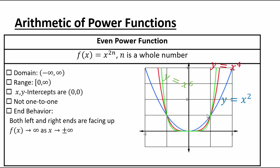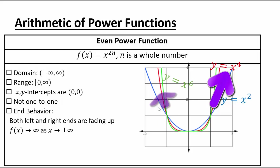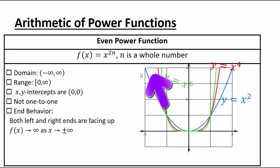The end behavior: both ends are facing up. When x goes to infinity, the function goes to infinity. When x goes to negative infinity, the function also goes to infinity. So those are our even power functions.